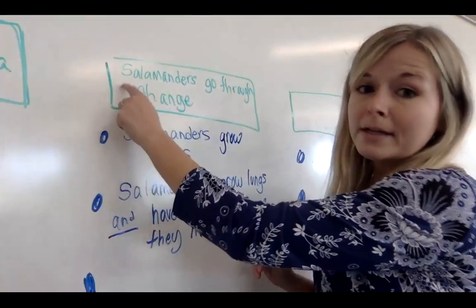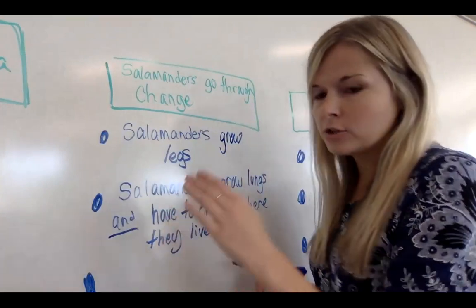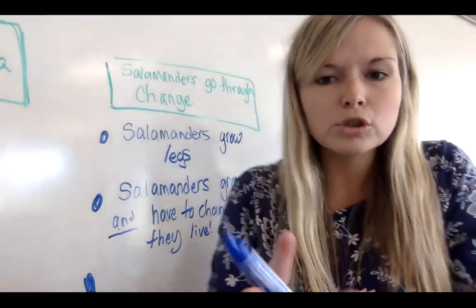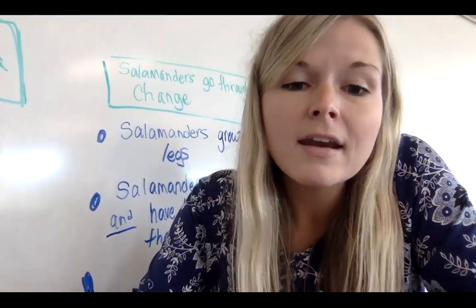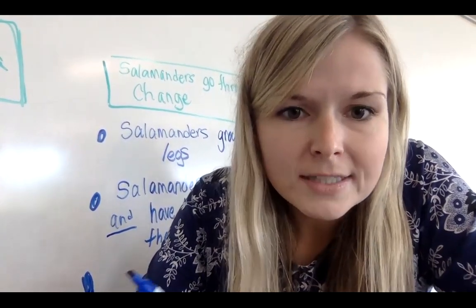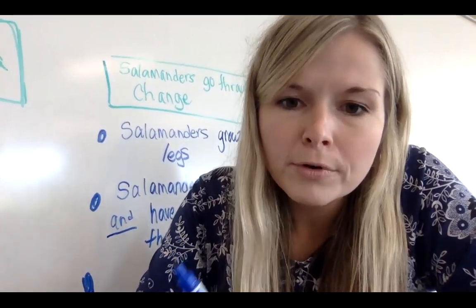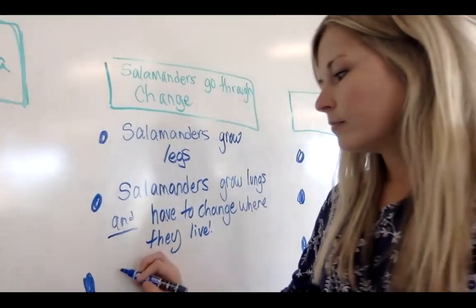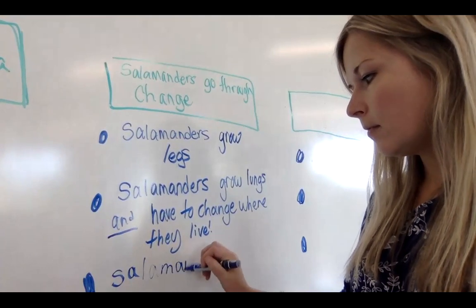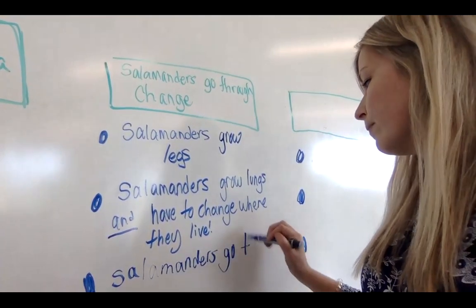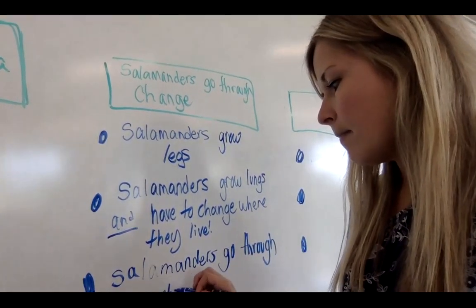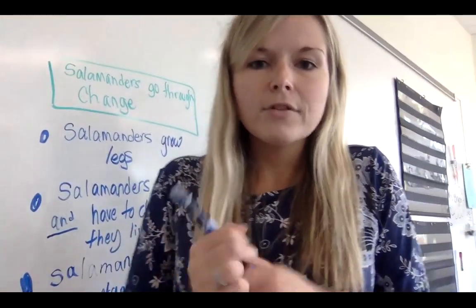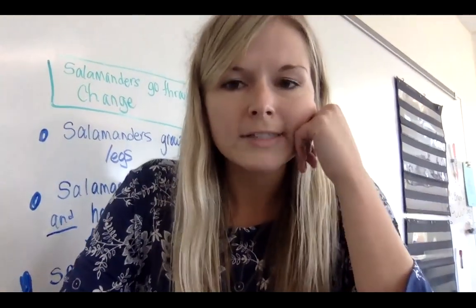So we know my main idea: salamanders go through change. I'm proving that — salamanders grow legs, that's a big change, and I read it in my book, so that's a supporting detail. And salamanders grow lungs and have to change where they live — those are huge changes. I can go back and find another detail. It says that salamanders go through metamorphosis, and that word metamorphosis means change. That's another big supporting detail. So salamanders go through metamorphosis. We have those three details that really point back to how salamanders go through change.